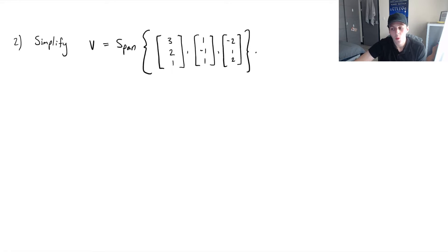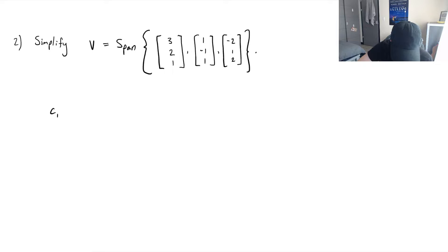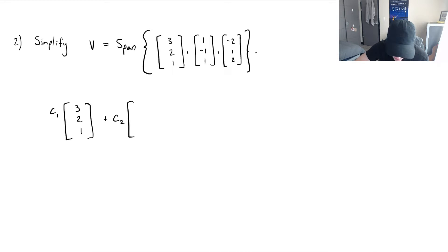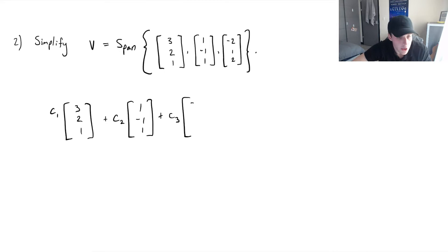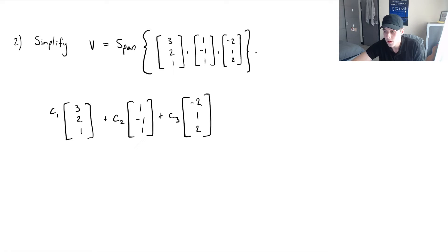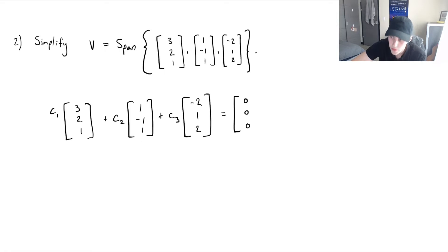What I recommend doing is setting up c1 times (3, 2, 1), plus c2 times (1, -1, 1), plus c3 times (-2, 1, 2). This is a linear combination of the three vectors for any constants c1, c2, and c3 — whatever this produces will be in the span. Then we set this equal to the zero vector, because there's a neat thing we can do to check if these vectors are linearly independent.